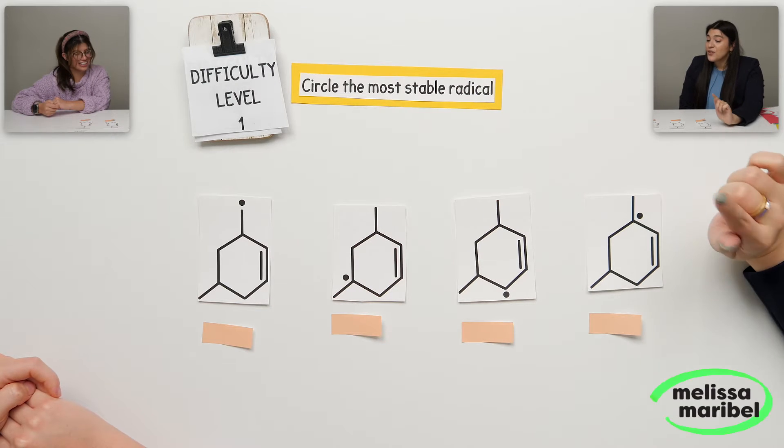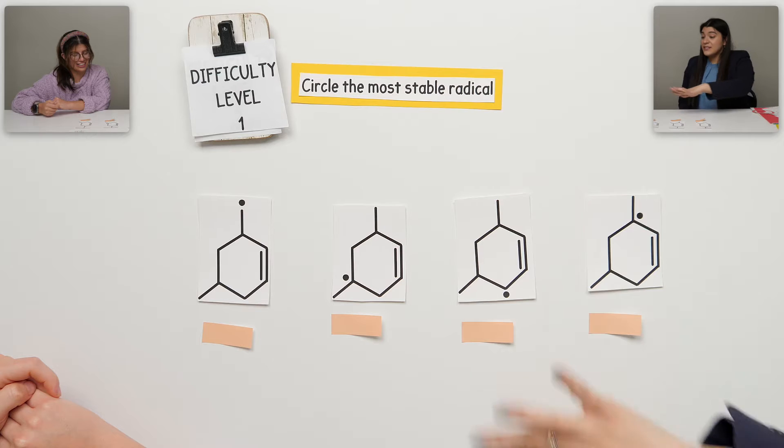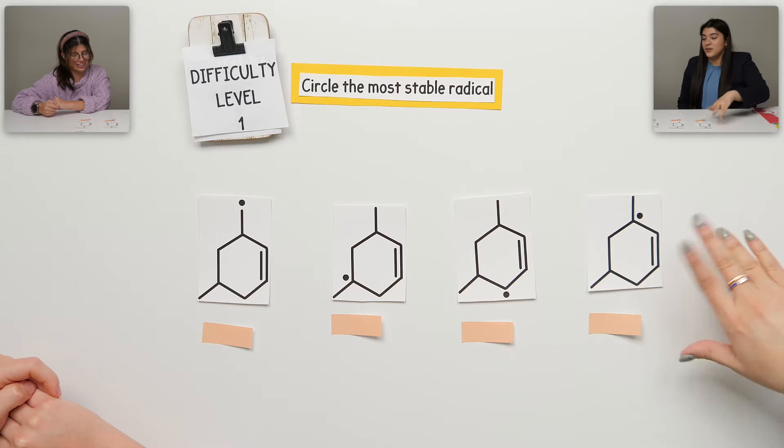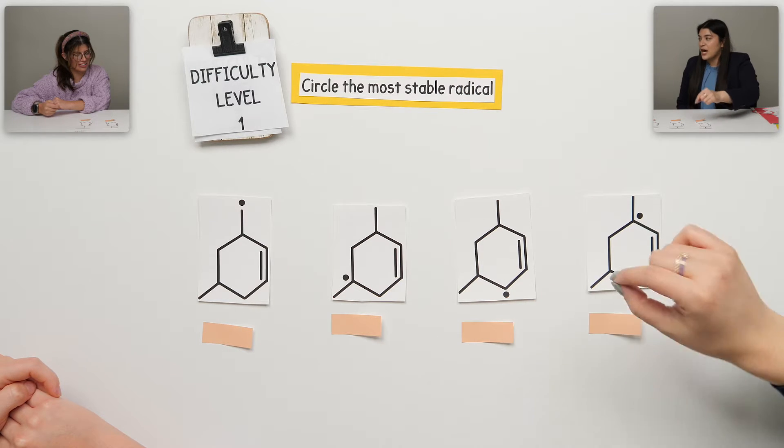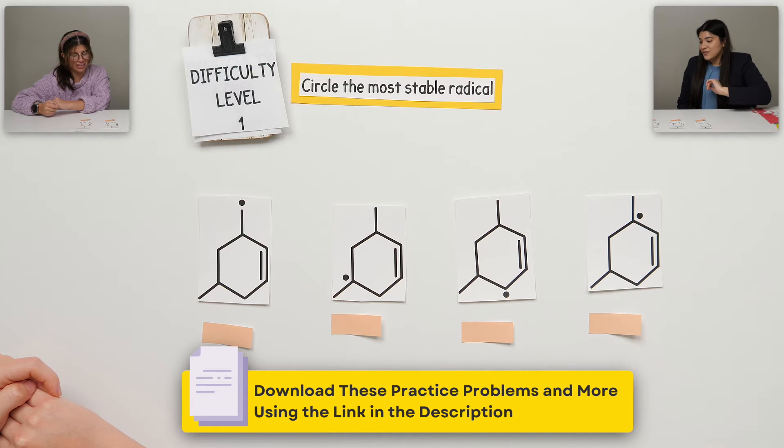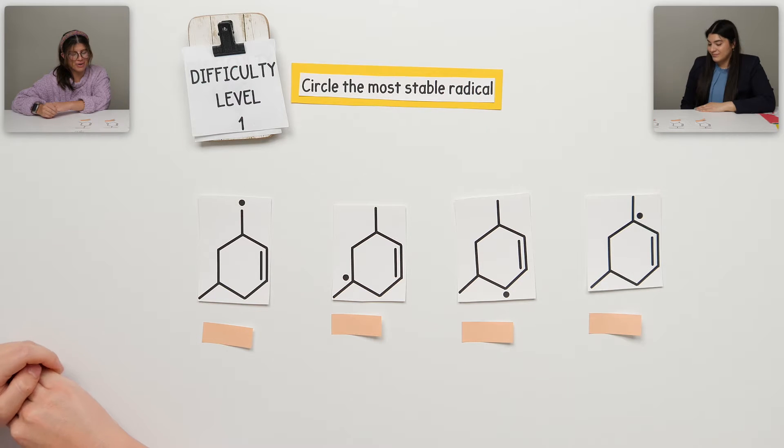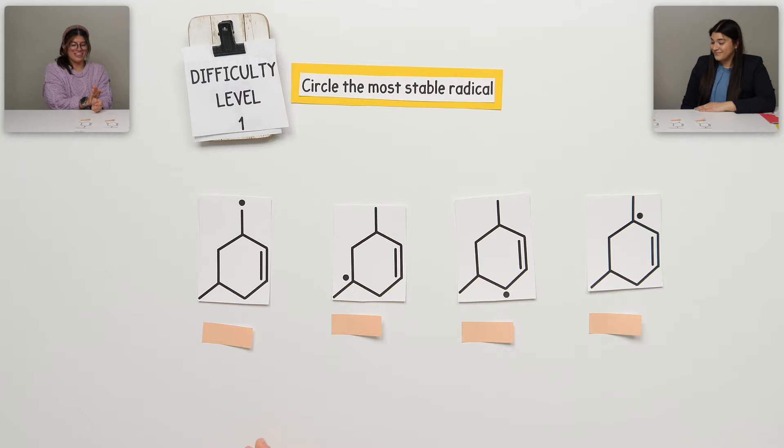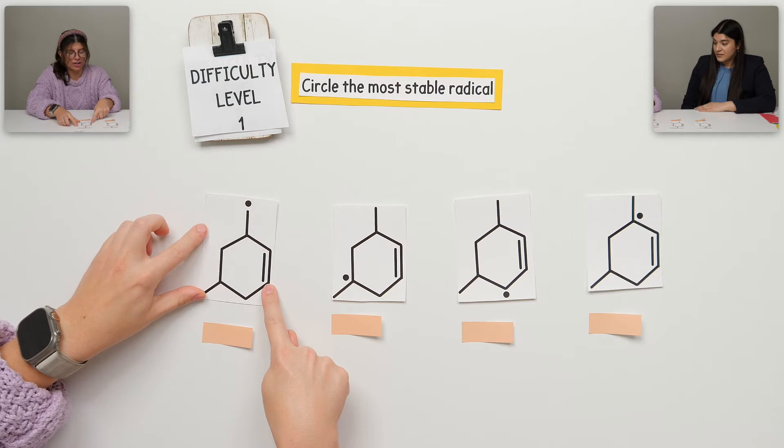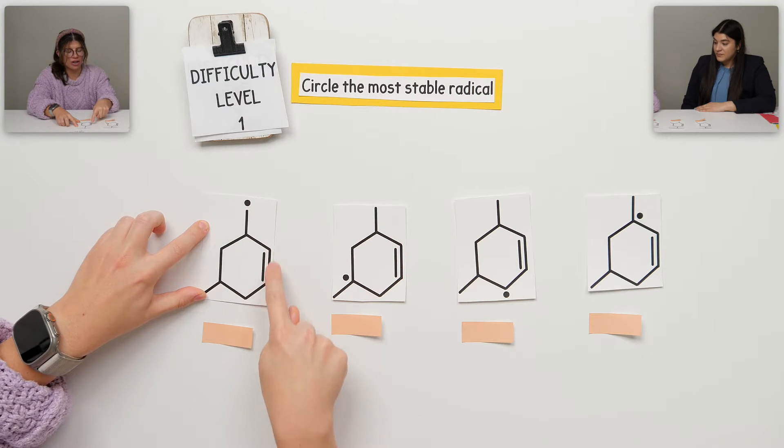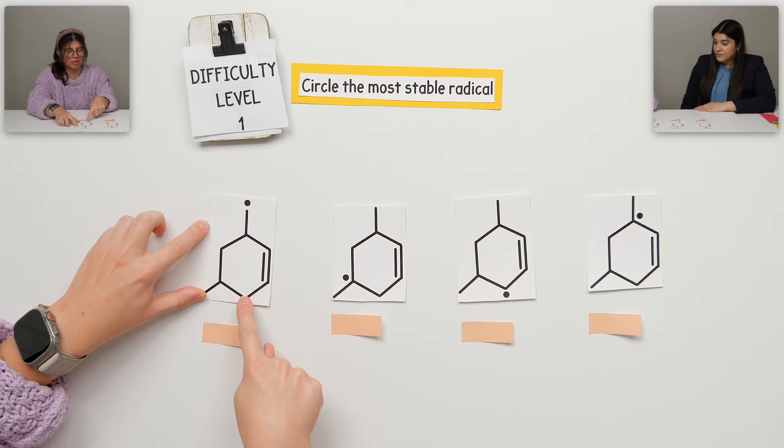First question is to circle the most stable radical. And within this, I also want us to label what each type would be, classify the radical. So first off, what do you think the most stable would be?